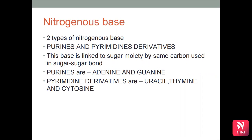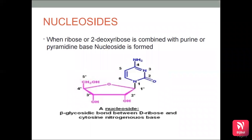When ribose or 2-deoxyribose is combined with a purine or pyrimidine base, a nucleoside is formed. In a nucleoside, only the sugar and the base are present; the phosphate group is absent. This is the major difference between nucleotides and nucleosides: in a nucleotide, phosphate, sugar and base are all present, whereas in a nucleoside, only sugar and base are present.